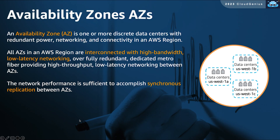Let's explore an availability zone in more detail — or what we will start calling it from now on, an AZ. An AZ is a location within an AWS region where AWS builds a set of data center buildings. An AZ location is strategically selected to be in different failure zones from other AZs, separated by tens of kilometers, so in case of a natural disaster affecting one AZ, it won't affect other AZs in the same region.